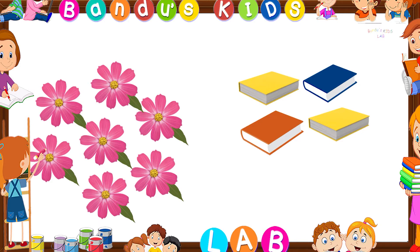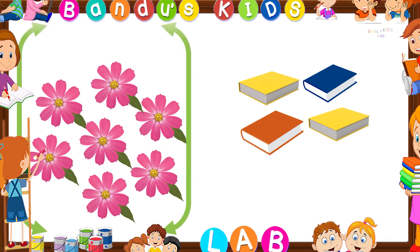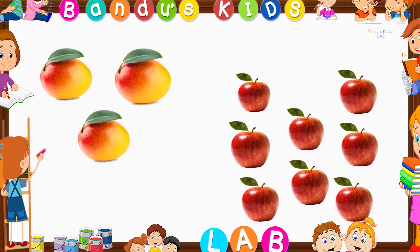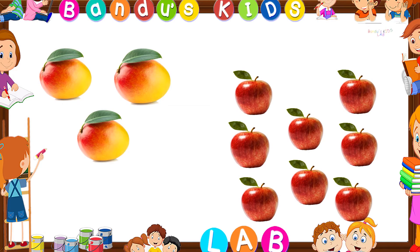Let's look at other examples. Look at this picture. Here are a set of flowers and a set of books. Let's count the flowers first: one, two, three, four, five, six, seven — here are seven flowers. Now let's count the books: one, two, three, four. The set of flowers is the more one and the set of books is the less one.